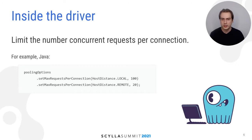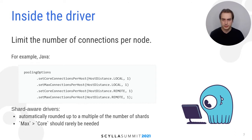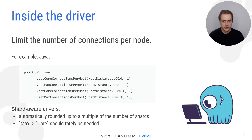Finally, you can limit the number of connections per node. There are two values: max and core. If max is greater than core, the driver will dynamically adjust the number of opened connections between core and max. But remember, if you're using a shard-aware driver — which you should — these numbers will be rounded up to a multiple of the number of shards. So if you set core to one and you have 64 shards on a given node, there will be 64 connections to this node. So you can probably set both max and core to one and the driver will round it up to the number of shards, and that's probably enough.